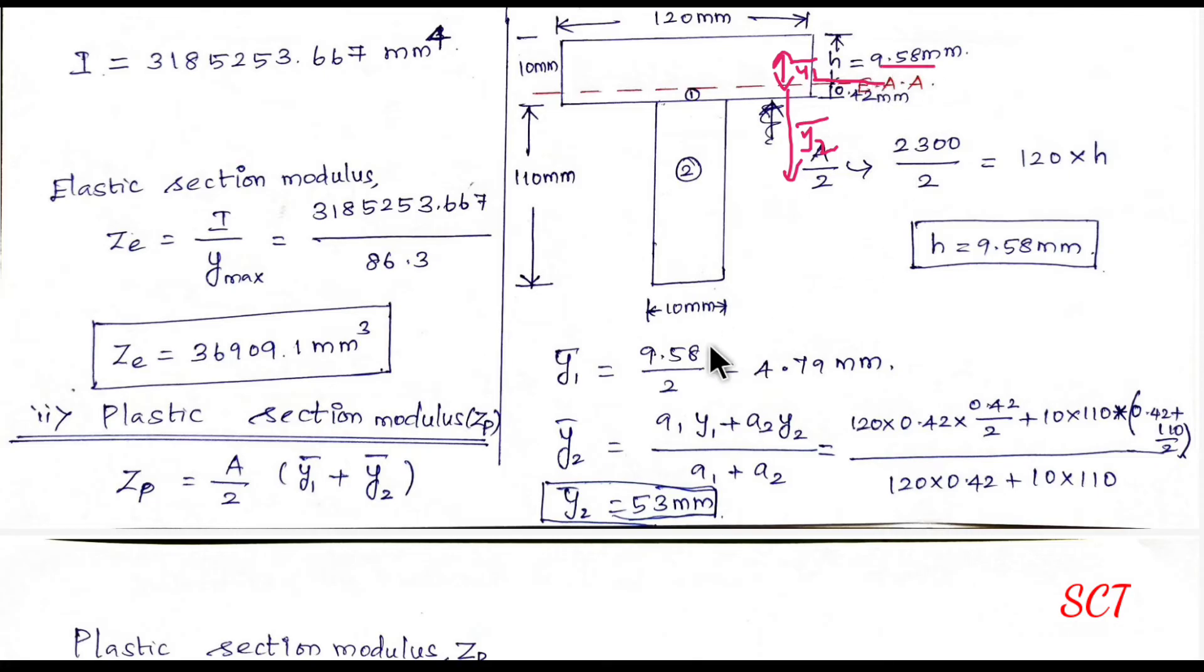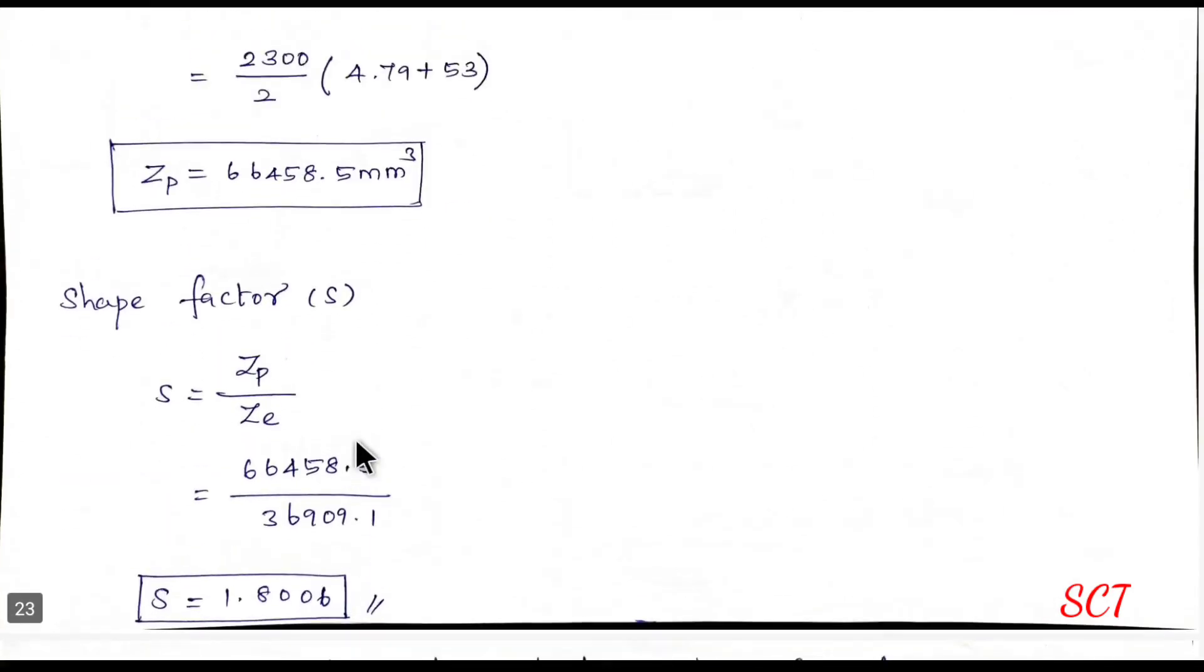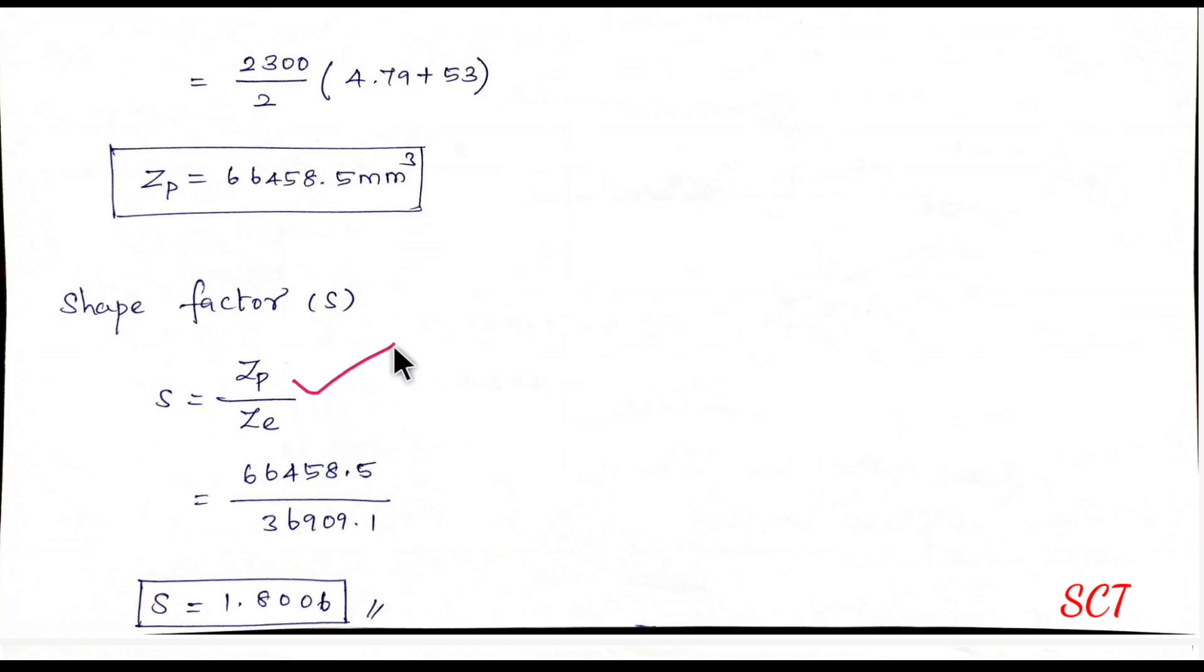So y1 bar is equal to 9.58. That is equal to y1 bar. If you divide the y2 bar, you divide the y2 bar in the drawing. This is the first section and the second section. As usual, the t-section is from the top. So a1, y1 plus a2, y2 divided by a1, a2. If you divide the area 1 value, 120 into 0.42, that is the y1 value, 0.42 divided by 2. Plus area 2 value, 10 into 110. Now the plastic section is more or less complete.